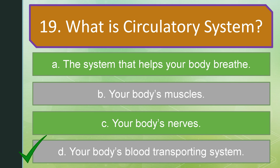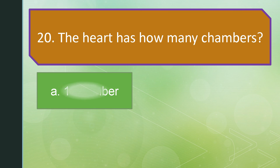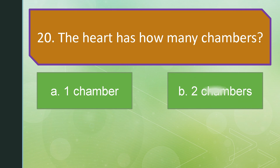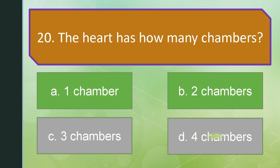And for the last question, question number 20. The heart has how many chambers? Is it A: One chamber. B: Two chambers. C: Three chambers. Or letter D: Four chambers. The correct answer is letter D: Four chambers.